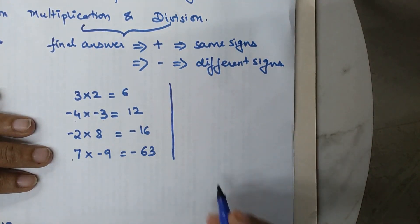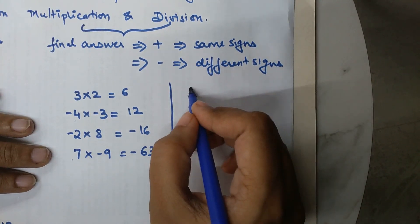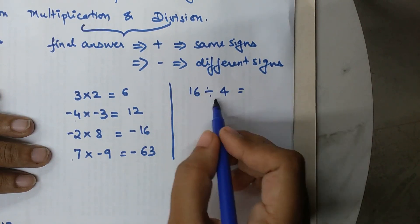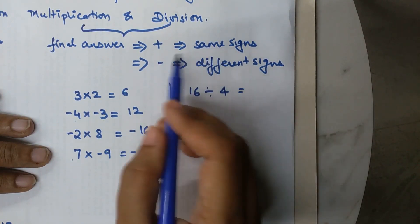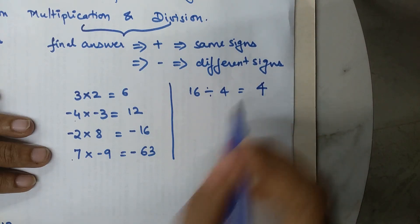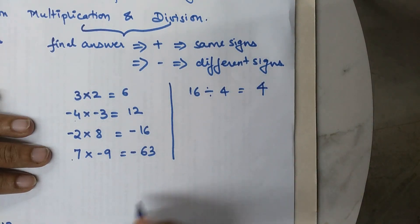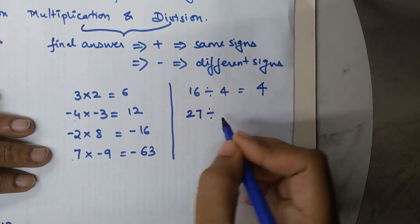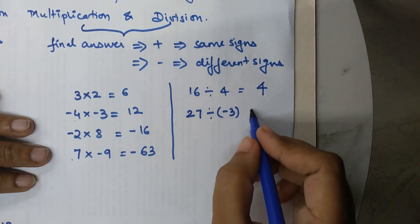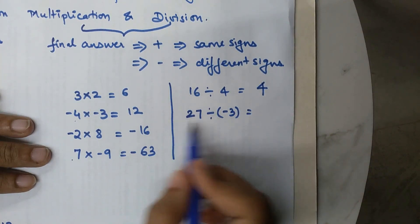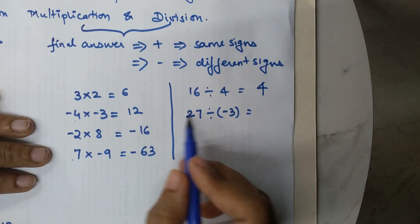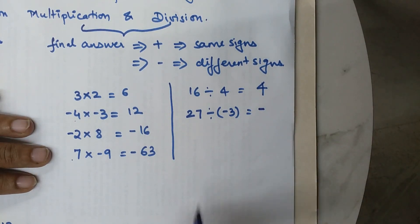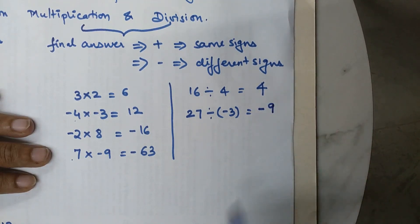Now for division: 16 divided by 4 — both positive, same signs — so the final answer is positive 4. Next, 27 divided by negative 3: one positive, one negative — different signs — so the answer is negative, and 27 divided by 3 is 9, giving negative 9.